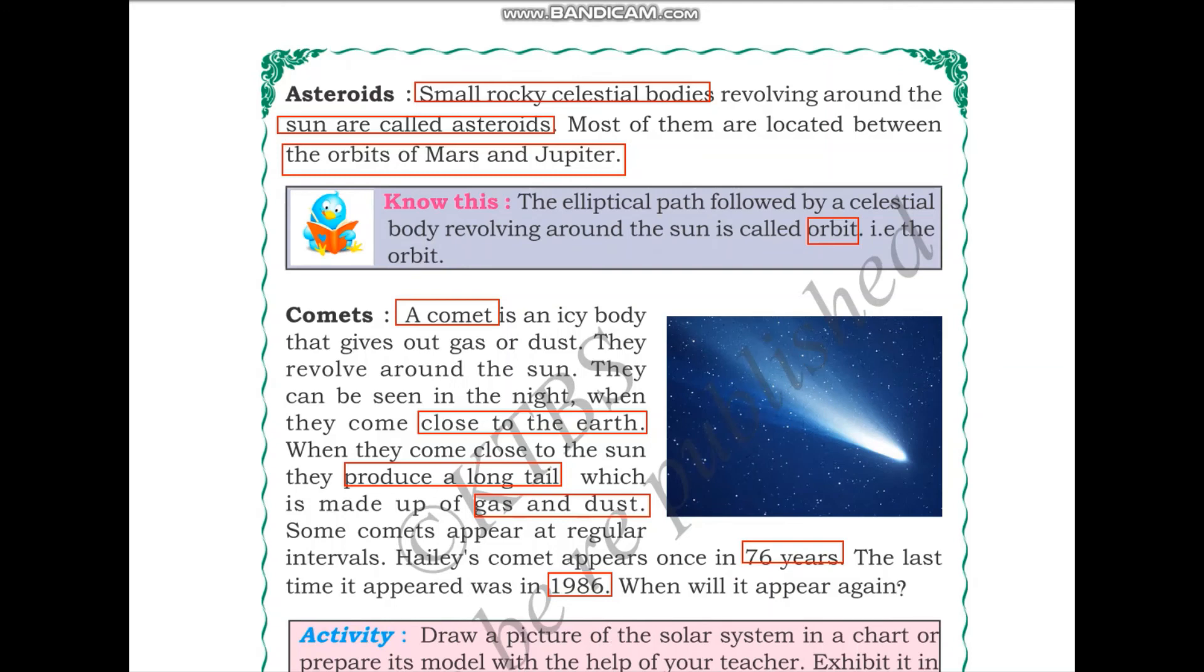You can do this math and figure out when Halley's comet will appear again. They have said that it appears once in 76 years. And it has appeared already in 1986. You need to add 76 to 1986 to figure out which year we will be able to see Halley's comet again.